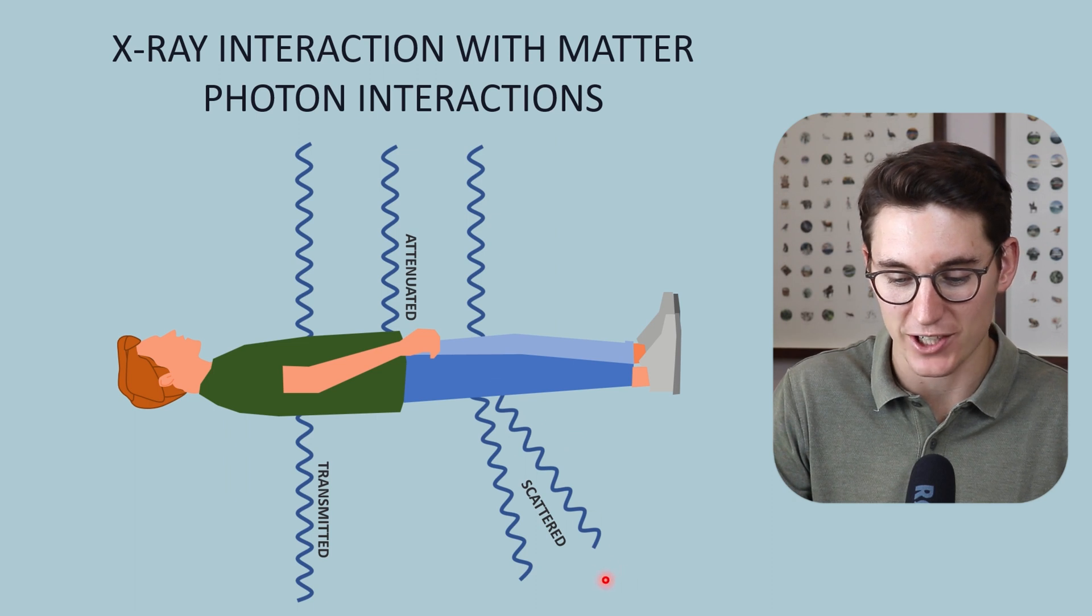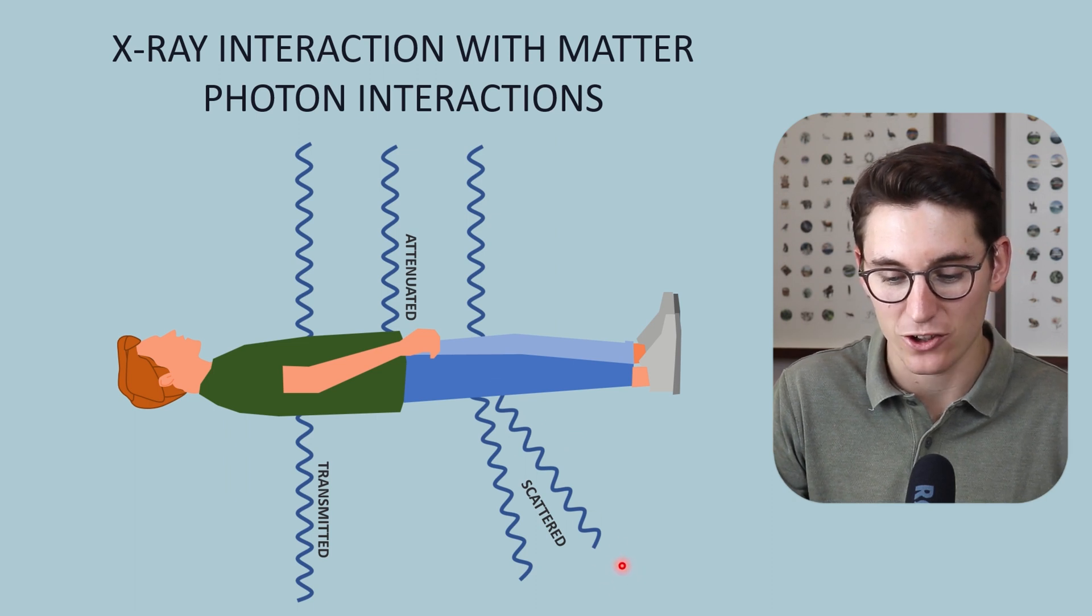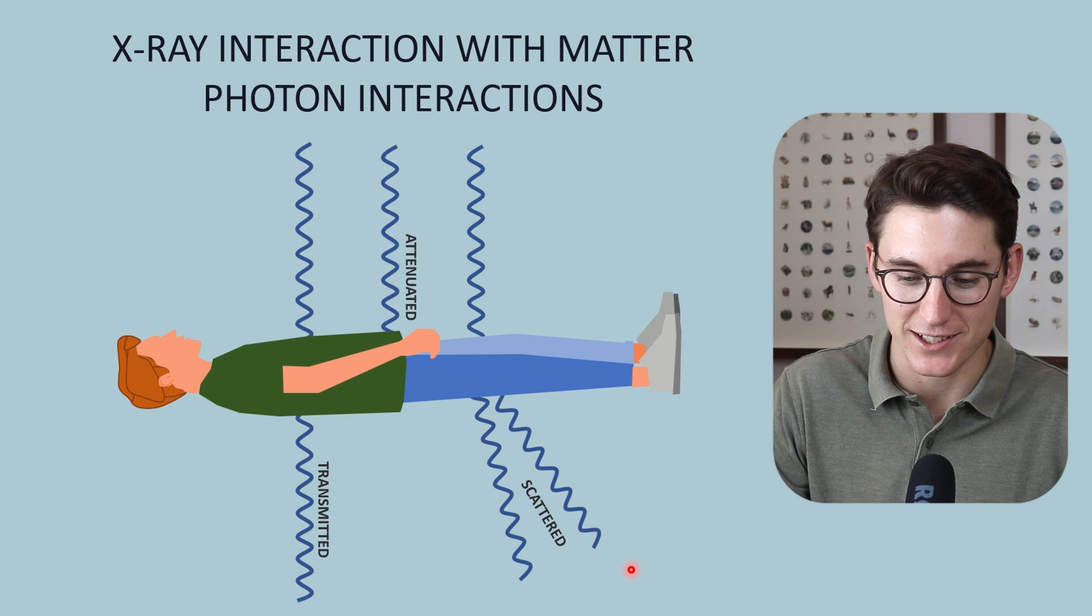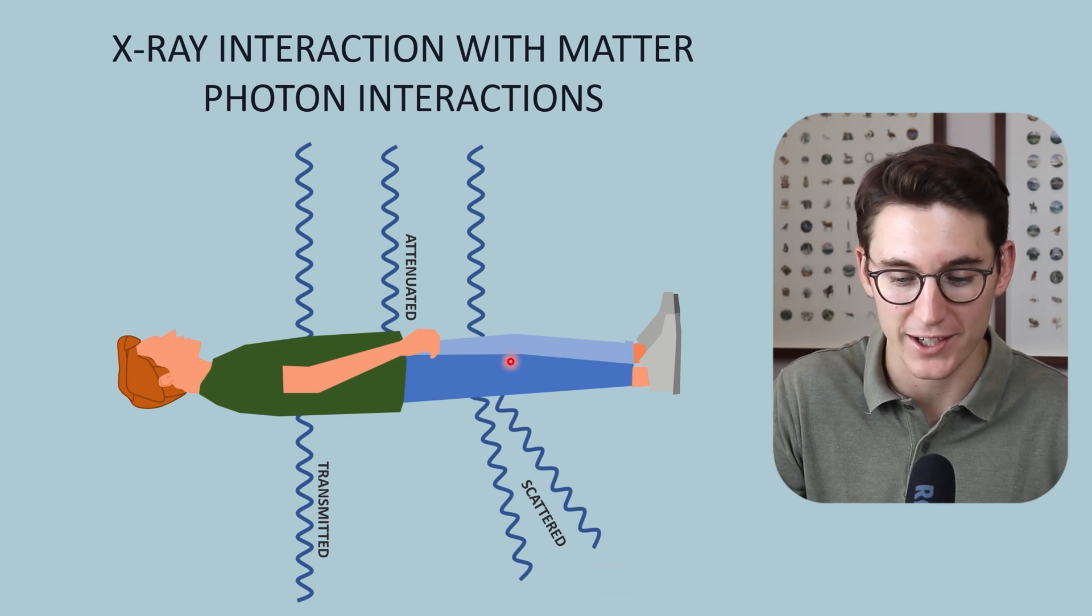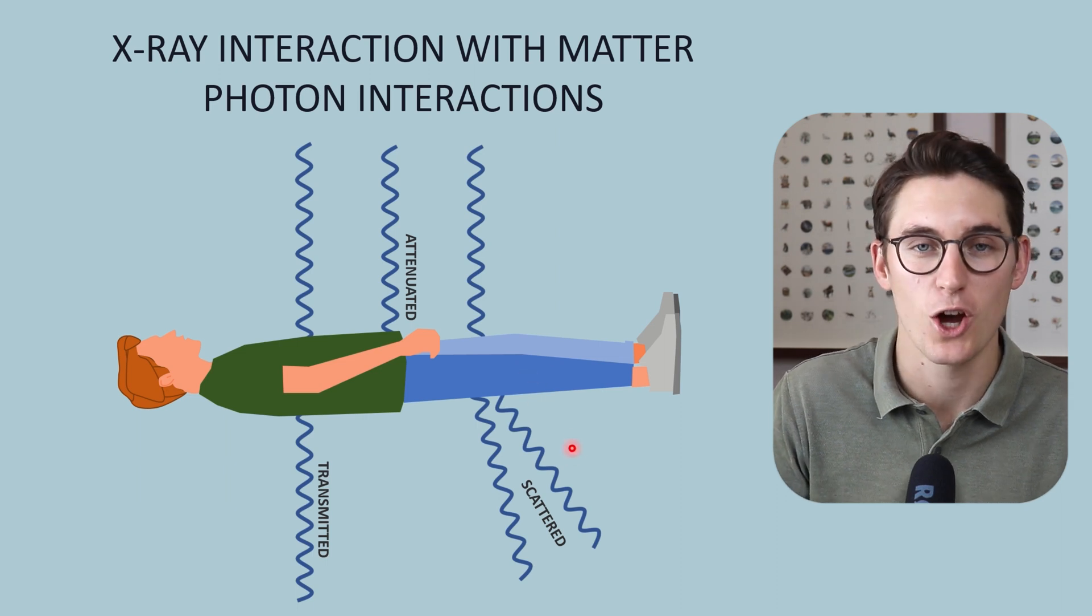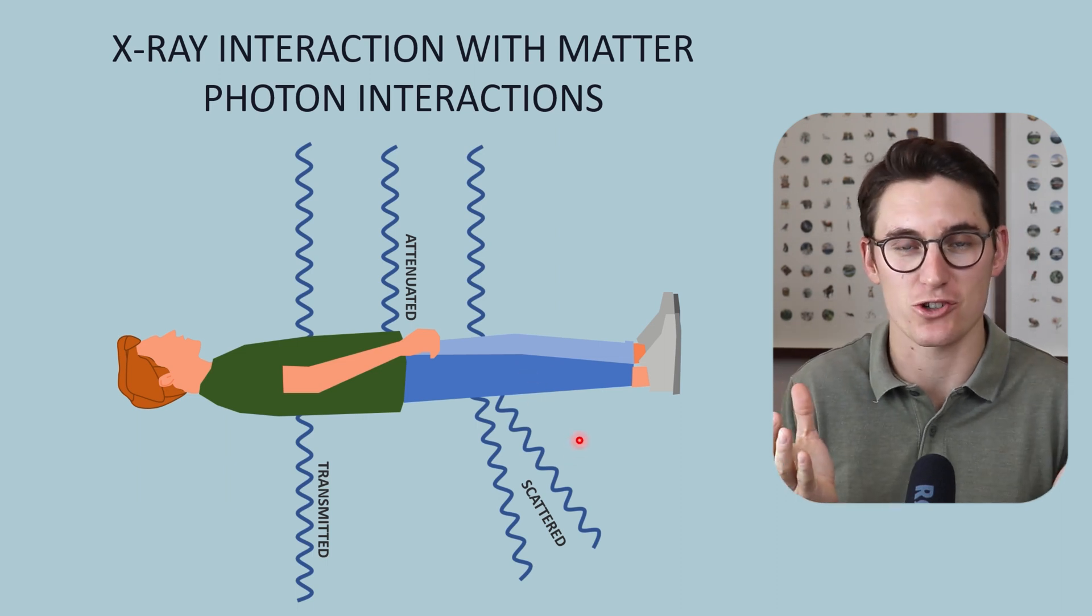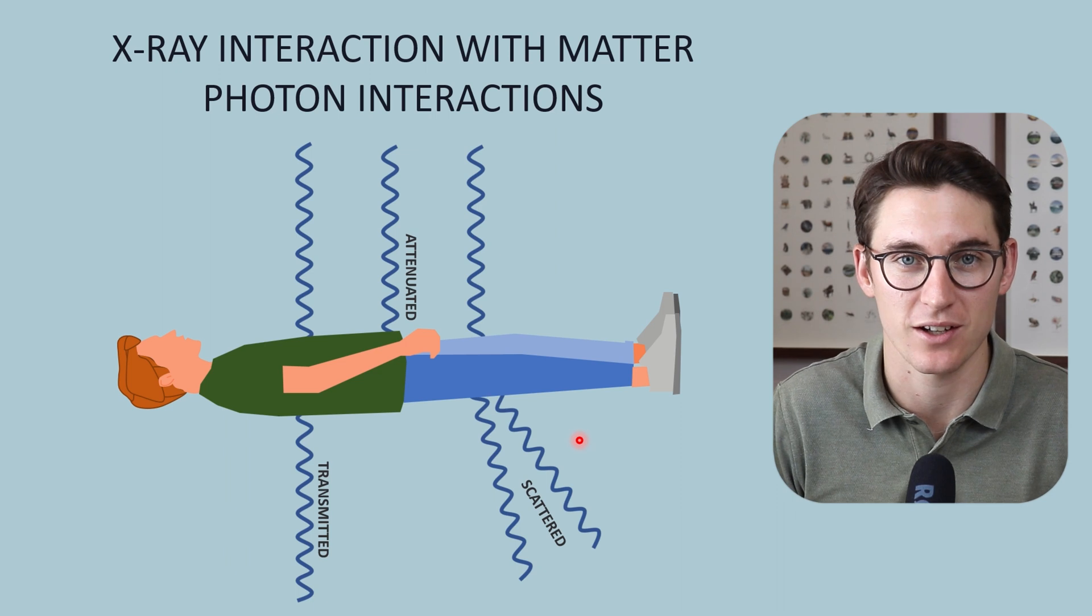When scattered x-rays hit our detector, they are not congruent with the incident x-ray beam. The signal on the detector provides no anatomic detail. All it does is decrease the contrast and increase the noise within our image.